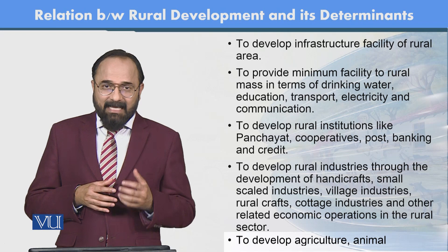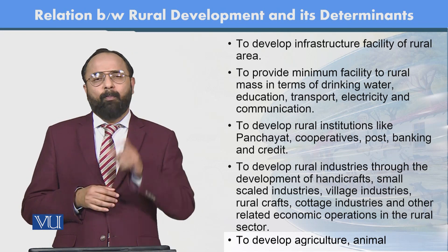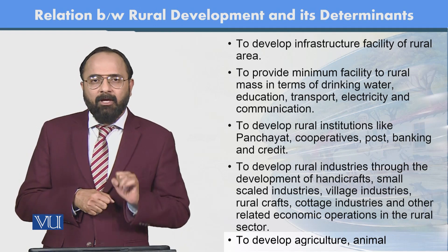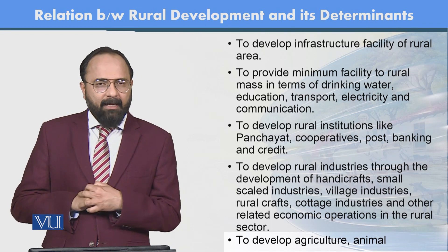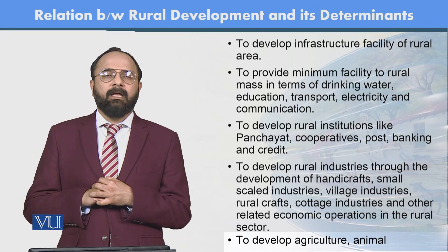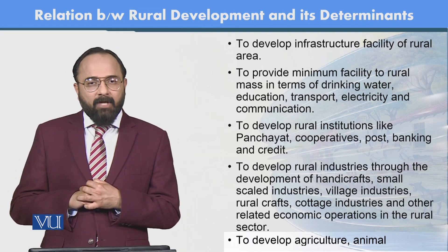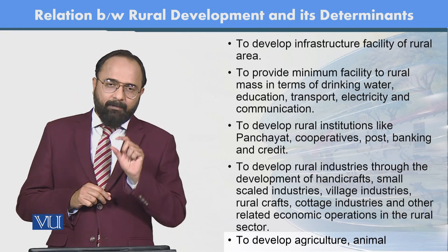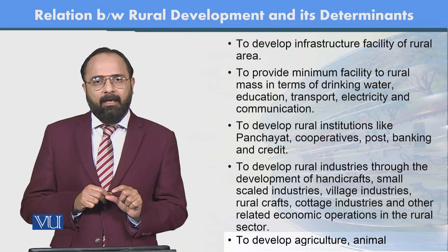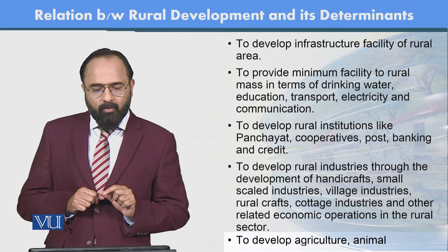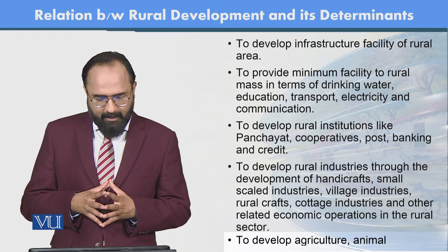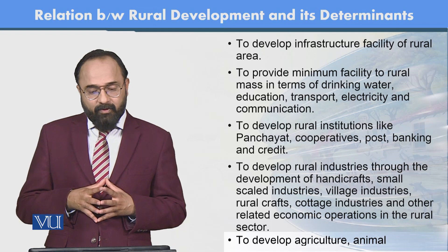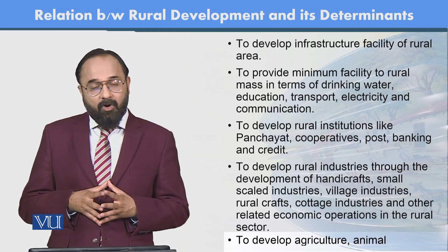Rural development aims to provide minimum facilities to rural communities in terms of drinking water, education, transport, electricity, and communication; to develop rural institutions like panchayats, cooperatives, posts, banking, and credit facilities۔ پنچائت سسٹم crime کی روک تھام اور rural areas کے disputes حل کرنے میں بہت important role play کرتا ہے — بہت سارے مسائل پنچائت میں ہی حل ہو جاتے ہیں۔